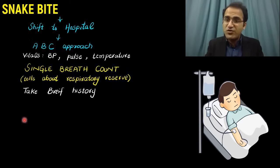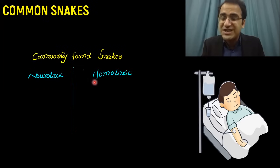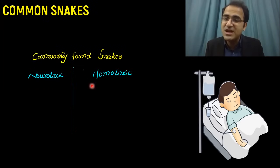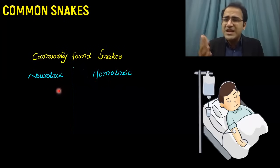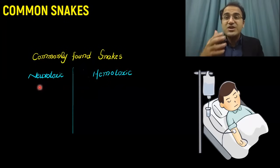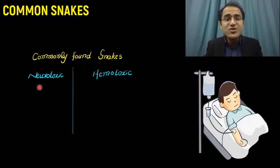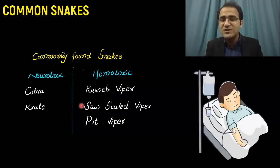After that, take a brief history from the patient. Commonly found snakes in our region — India, Pakistan, Bangladesh — are either neurotoxic or hemotoxic. Neurotoxic snakes include cobra and krait. Hemotoxic snakes include Russell's viper, saw-scaled viper, and pit viper.